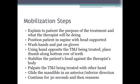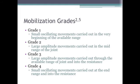To perform this treatment, explain to the patient the purpose of the treatment and what you will be doing. Position the patient supine with their head supported. Wash your hands and put on gloves, then remind the patient that if at any time they feel uncomfortable, to either tap the table or tap your arm. Using your hand opposite the TMJ being treated, place the thumb along the bottom of the teeth. Stabilize the patient's head against your body with your other hand while palpating the TMJ joint. Glide the mandible in an anterior direction for 30 seconds, then reassess.